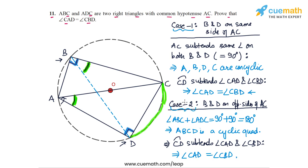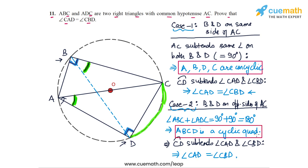The key idea in both cases was to show that the quadrilateral formed is a cyclic quadrilateral. In Case 1, we used the fact that the hypotenuse subtended the same angle at both right-angled vertices. In Case 2, we used the fact that the opposite angles of the quadrilateral were supplementary. In both cases, the final step was that arc CD subtends equal angles at the circumference. This completes Question 11.